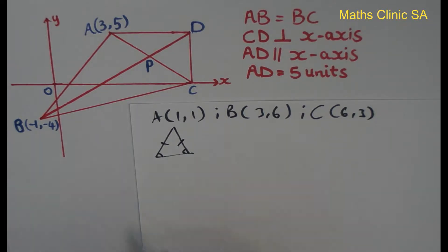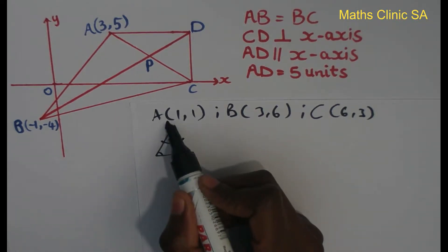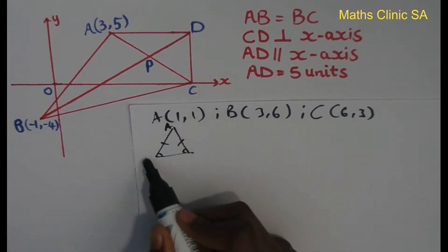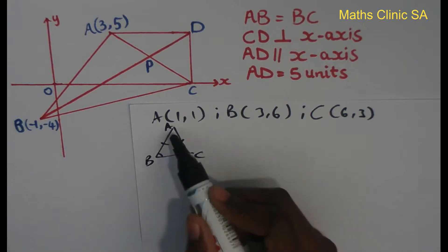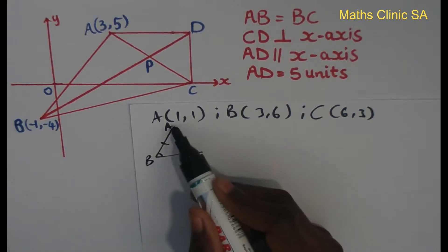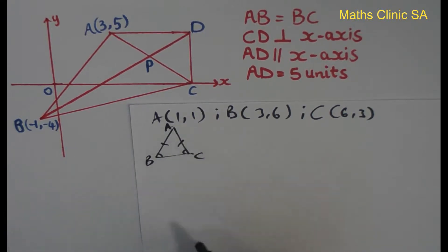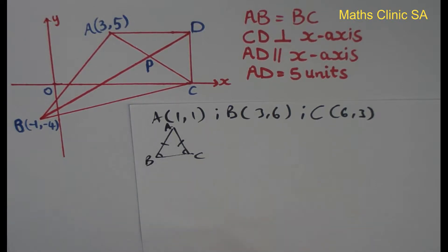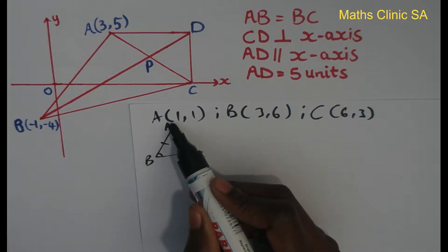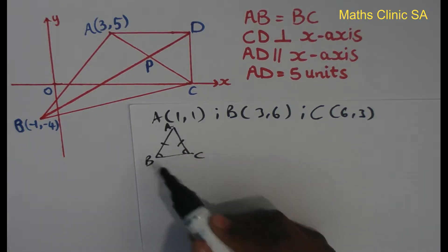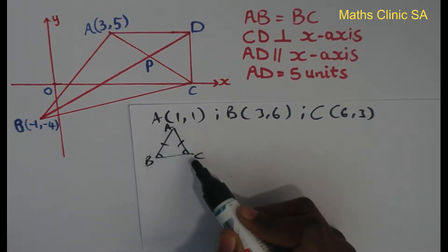So if you can prove that AB equals AC, it's an isosceles triangle.